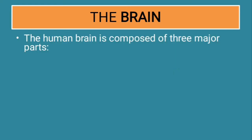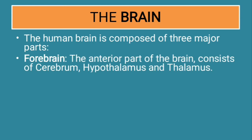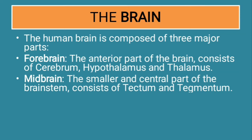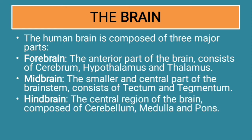The human brain is composed of three major parts. The forebrain — the anterior part of the brain — consists of cerebrum, hypothalamus, and thalamus. Then there is the midbrain, the smaller and central part of the brain stem, which consists of tectum and tegmentum. And the hindbrain, the central region, is composed of cerebellum, medulla, and pons. So the brain has three parts: forebrain at the front, midbrain in the middle, and hindbrain at the back, and each part has different functions.